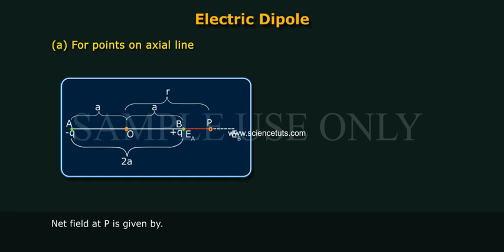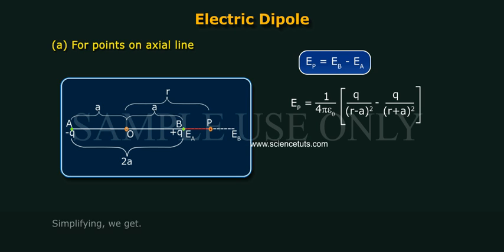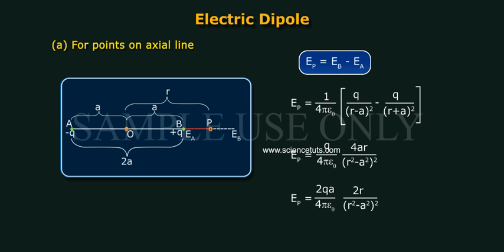Net field at P is given by Ep equals Eb minus Ea, which equals 1 by 4 pi epsilon naught of [Q by (R minus A) whole square minus Q by (R plus A) whole square]. Simplifying we get Ep is equal to Q by 4 pi epsilon naught times 4Ar by (R square minus A square) whole square. Ep is equal to 2QA by 4 pi epsilon naught times 2R by (R square minus A square) whole square.